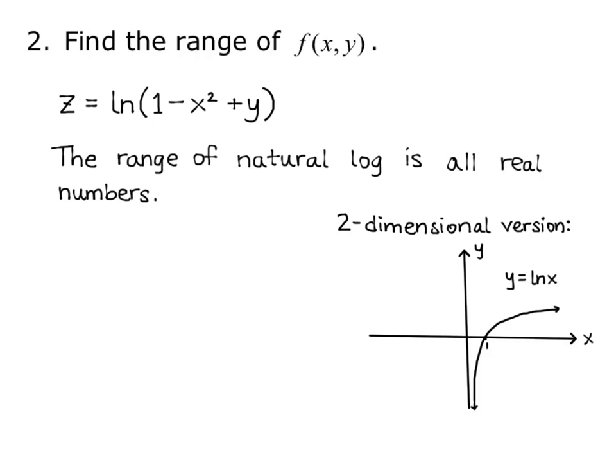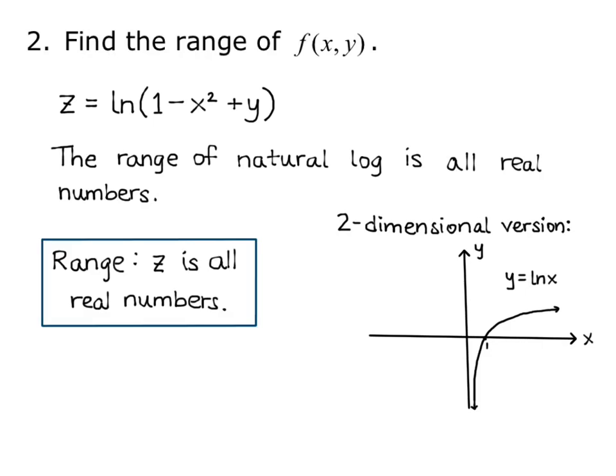We know from algebra that the range of natural log is all real numbers. If you forget, graph the two-dimensional version in your calculator as a reminder. The range for the three-dimensional graph will also be all real numbers, but the output variable is z. So the range is z is all real numbers, which can also be written as R.